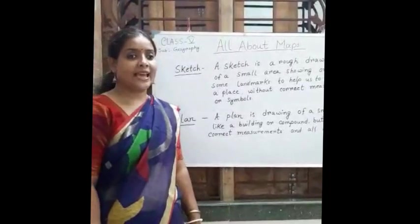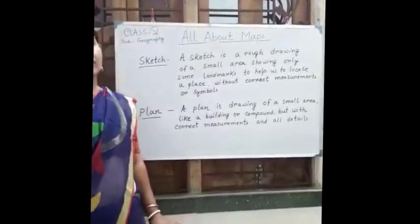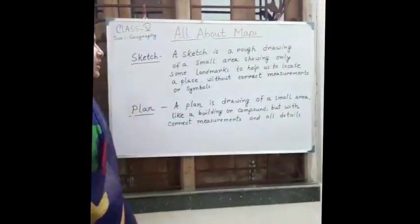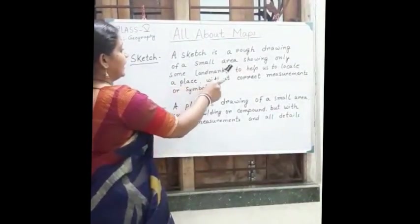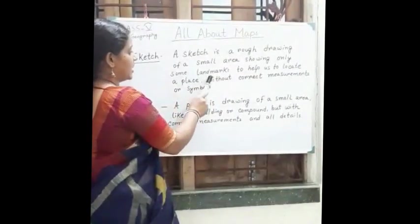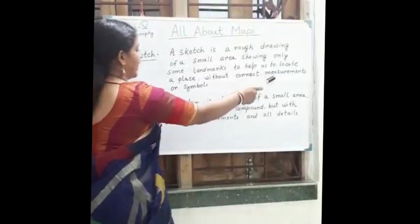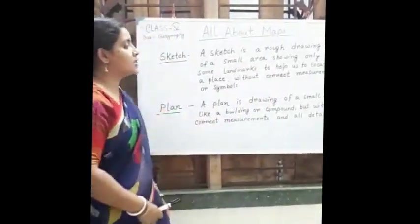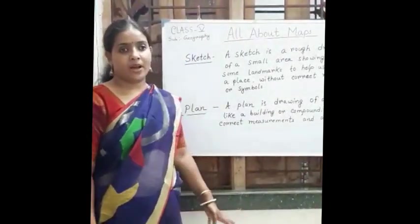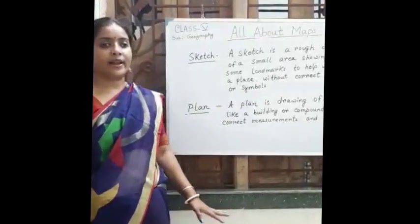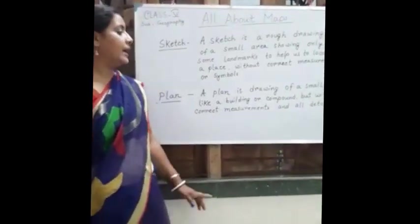Now, we will know about sketch and plan. What is a sketch? A sketch is basically a rough drawing of a small area showing only some landmarks to help us locate a place without correct measurements or symbols. A sketch is a rough drawing. It is showing only some landmarks. In an area, some important landmarks are being shown and the sketch is drawn without any scale or any symbols.